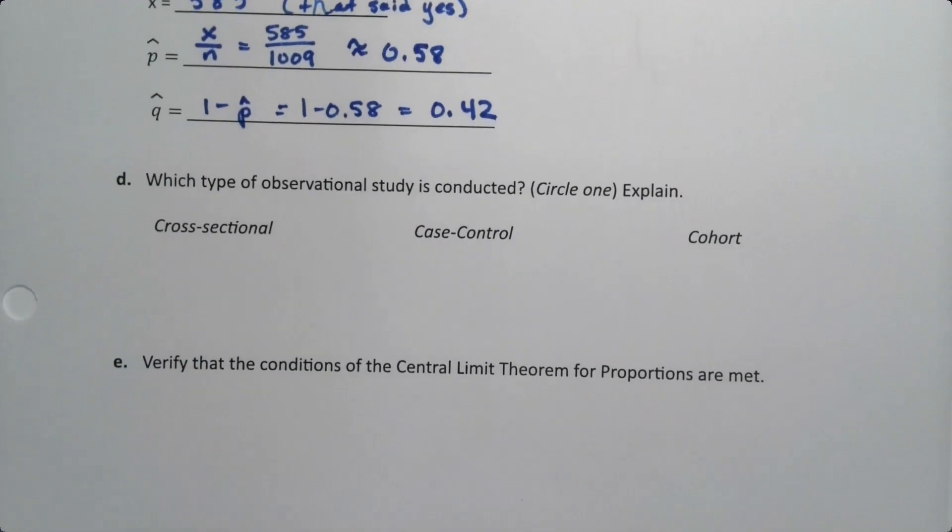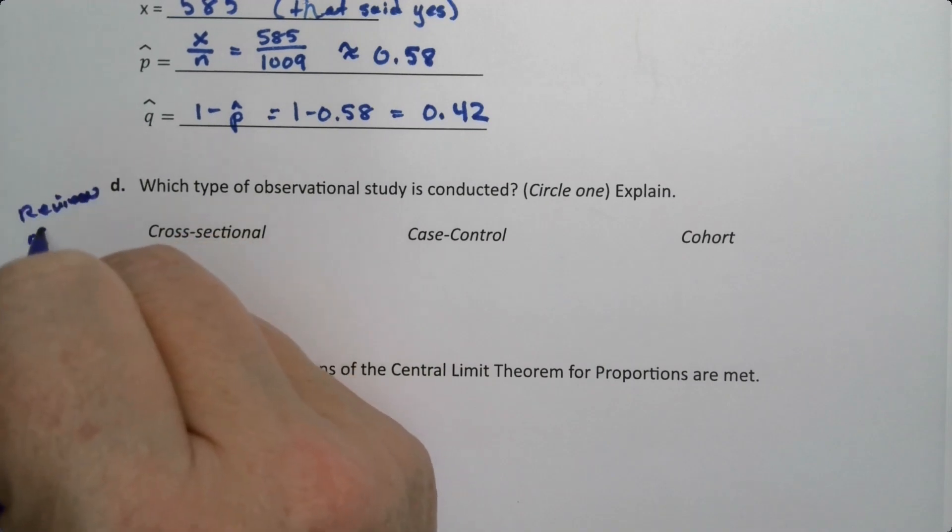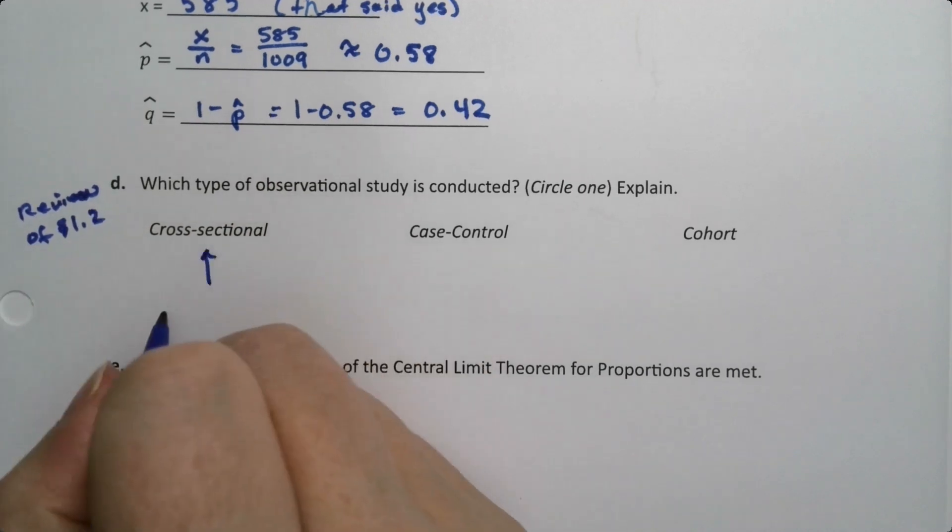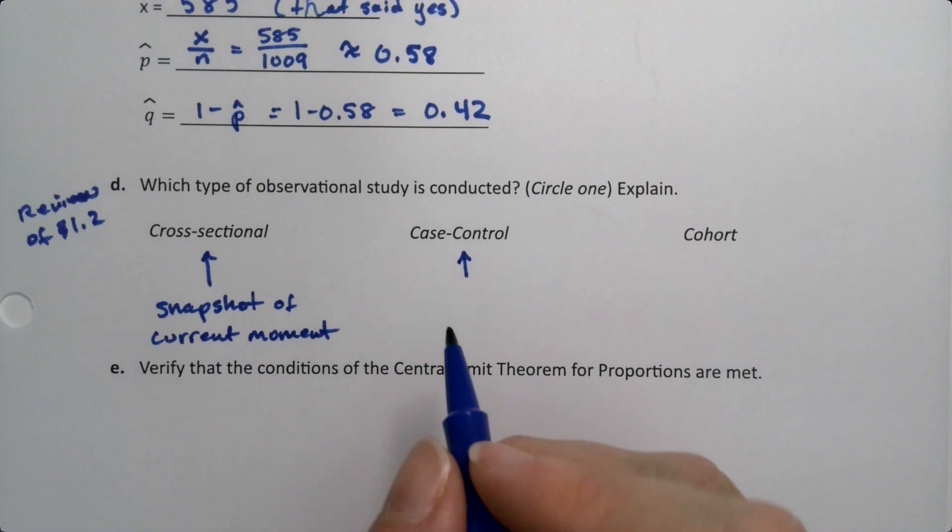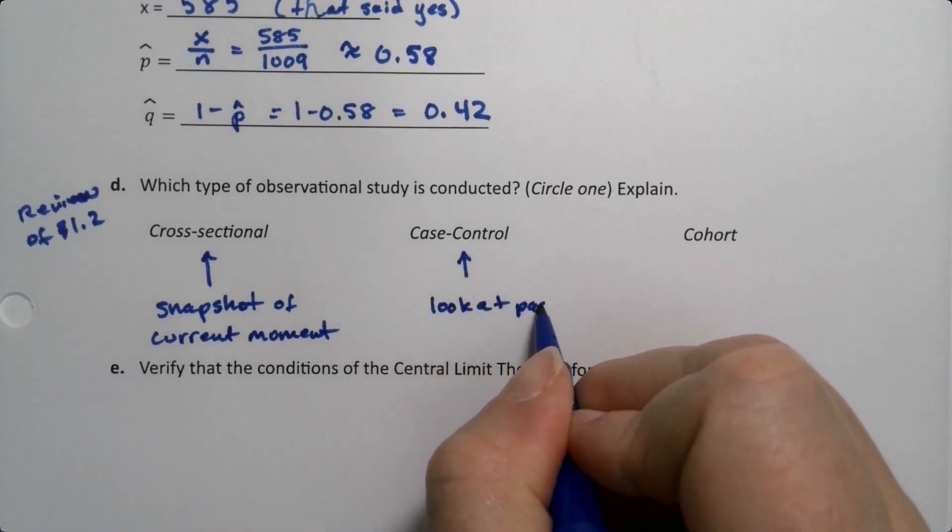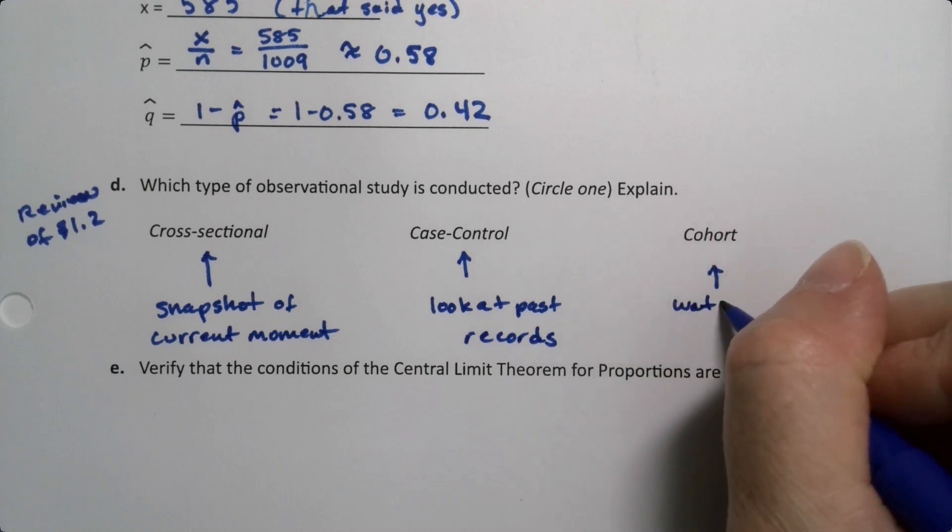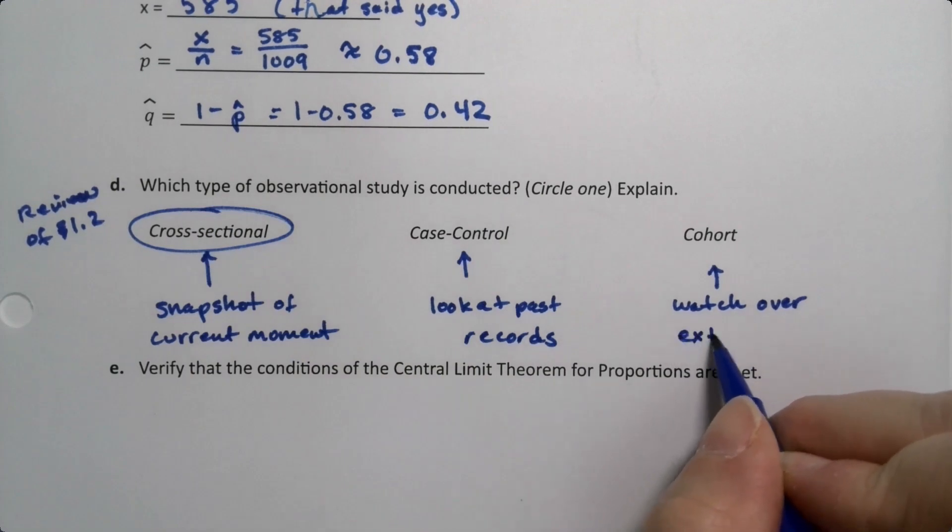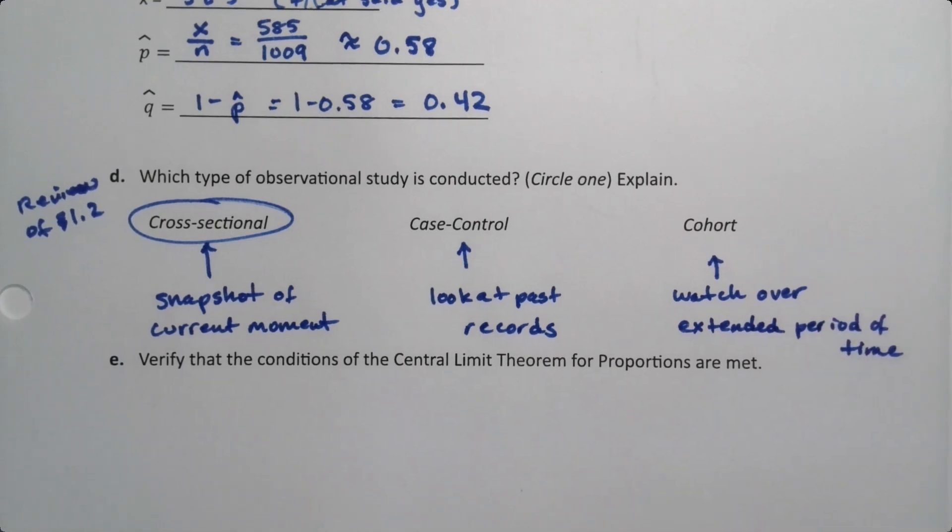Now what type of observational study is conducted here? This is a review of section 1.2, when we learned these. This one is a snapshot of the current moment. This one is looking at past records, and this one is when we track and watch over an extended period. Rather obviously, it's this one, but I just wanted to remind everybody what those three were when you call up people and ask them their feelings on something. That's cross-sectional.